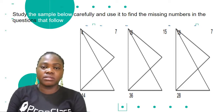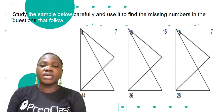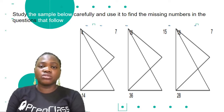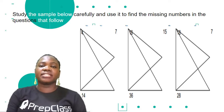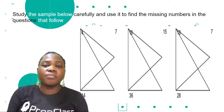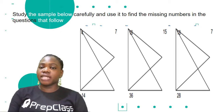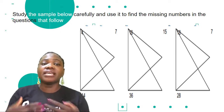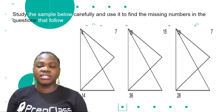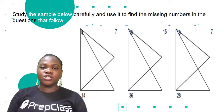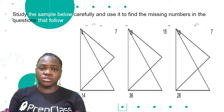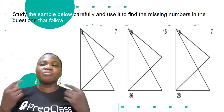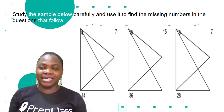You'll be given a set of samples to study. Once you're able to study it, you will find out the math necessary to solve the problem. Once you do that, you can go ahead and find the missing numbers in the questions that follow. Quantitative reasoning helps you to think — you have to think deeply to be able to get your answers.